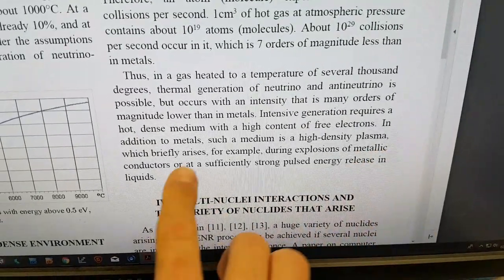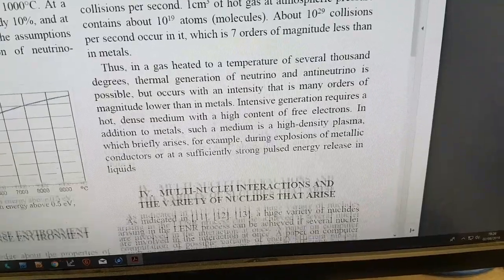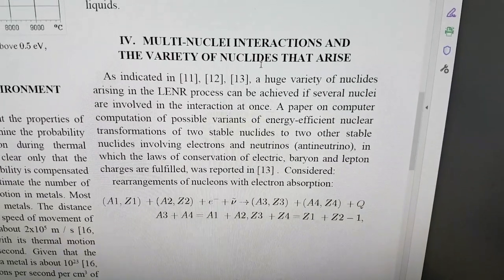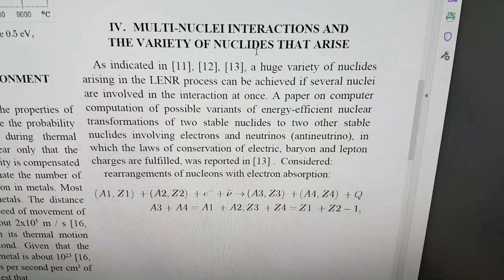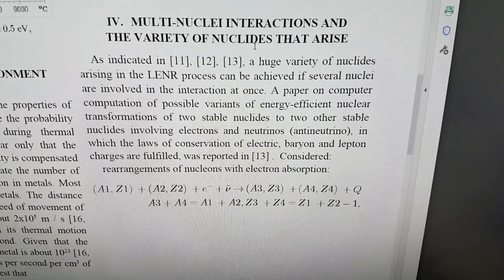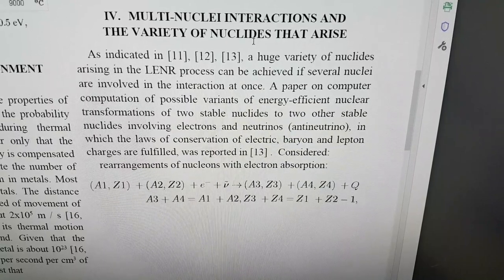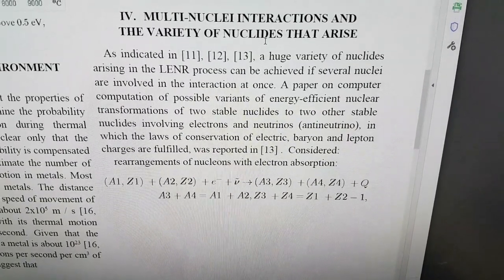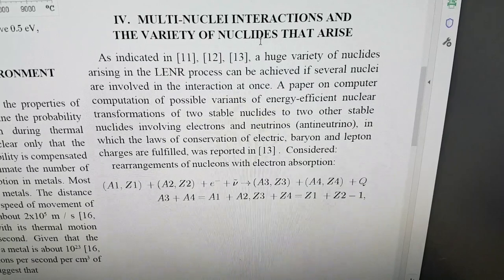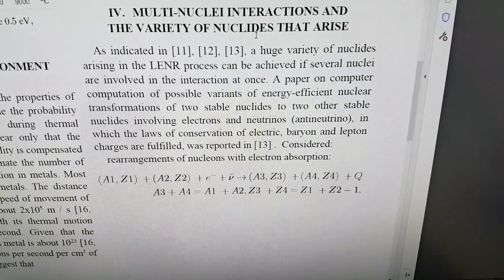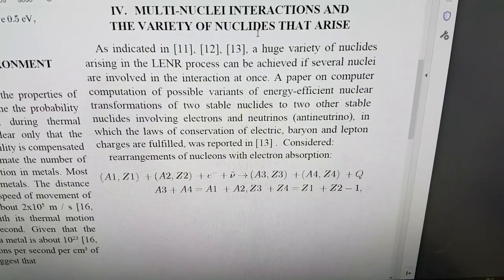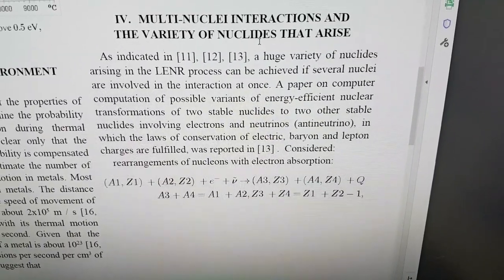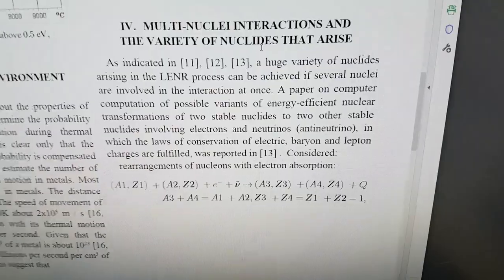We're exploding wires here and classic Mizuno electrolysis, or pulsed electrolysis. The multi-nuclei interaction and the variety of nucleides that arise. A huge variety of nucleides arising in the LENR process can be achieved if several nuclei are involved in the interaction at once. This is what we've made into the reaction tables.